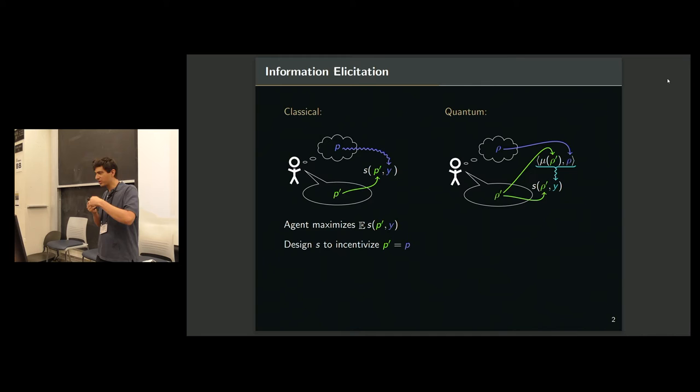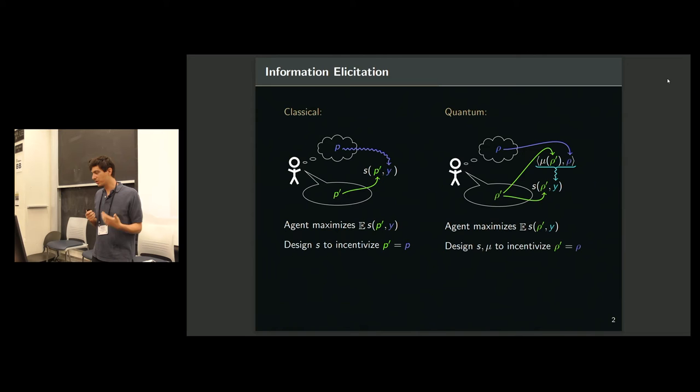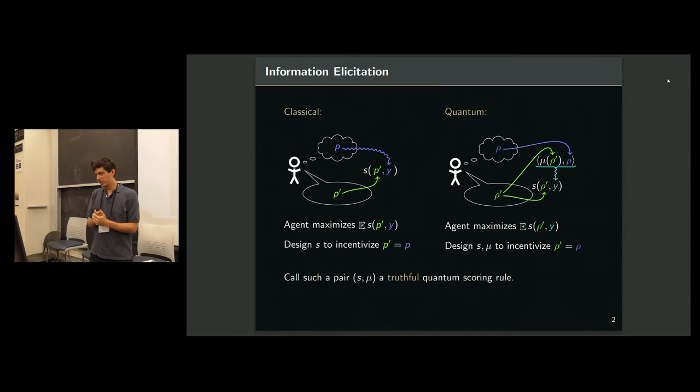Given this slightly more complicated setup, the agent is trying to maximize their expected score, and you want to design now both the scoring rule and the measurement function to incentivize them to tell you the true mixed state from their point of view. So let's call such a pair S mu that correctly incentivizes truthful reporting a truthful quantum scoring rule.